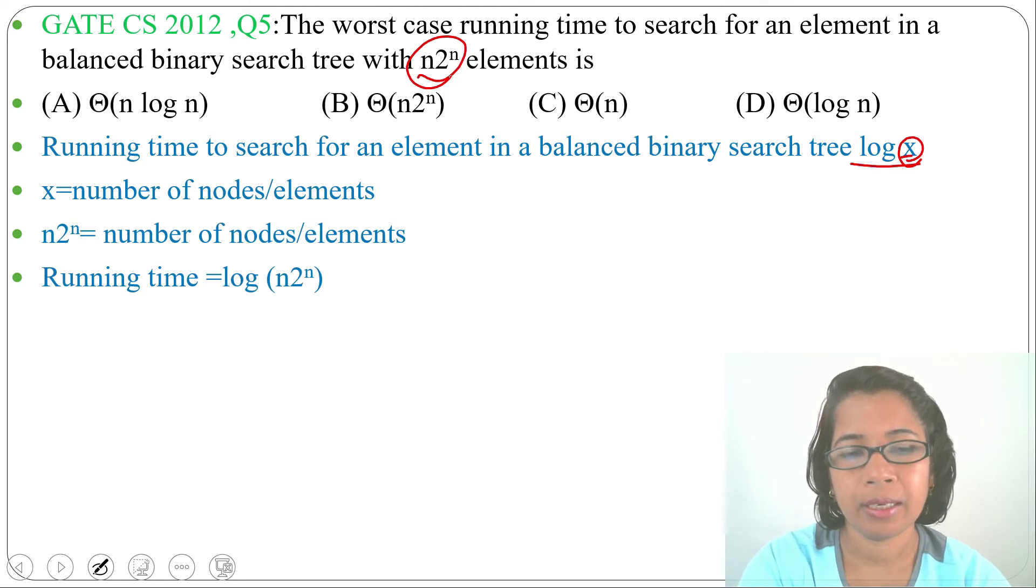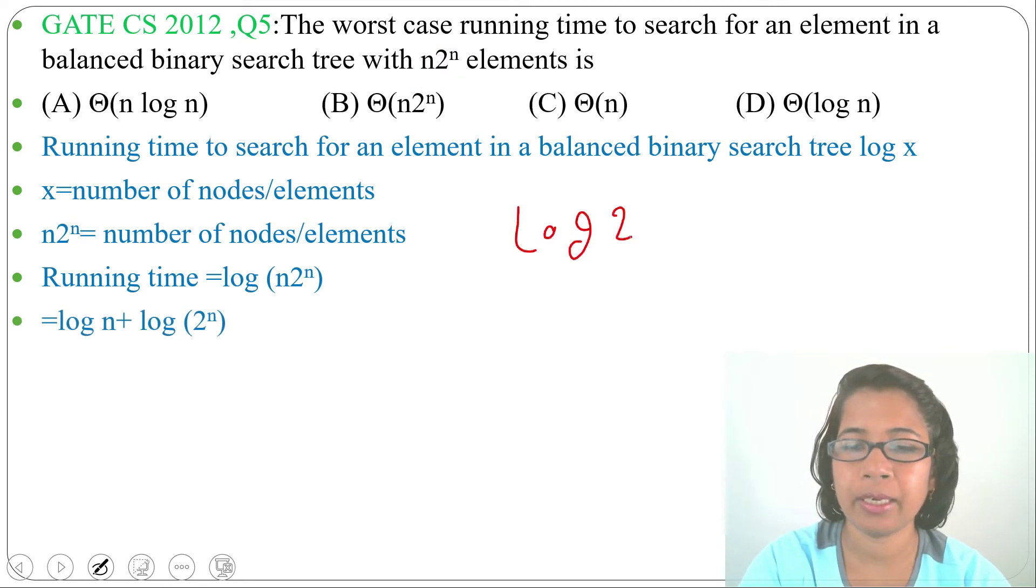So running time will be log(n×2^n). Now I can split this so it will be log(n) + log(2^n). Log of 2^n... this n you can take to the left side so it will be n×log(2).